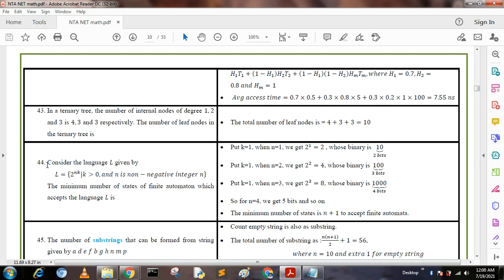Next question: Consider the language L given by L = {2^(nk) | k > 0 and n is a non-negative integer}. The minimum number of states of finite automaton which accepts the language L is: We put k = 1 and n = 1, we get 2^1 = 2 whose binary representation is 10, that is 2 bits. Next, put k = 1 and n = 2, we get 2^2 = 4 whose binary value is 100, that is 3 bits.